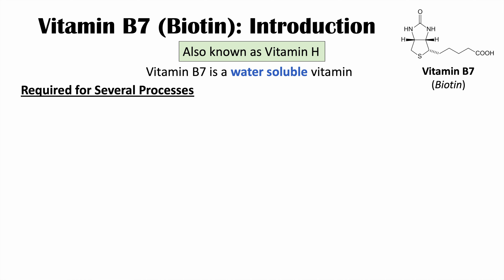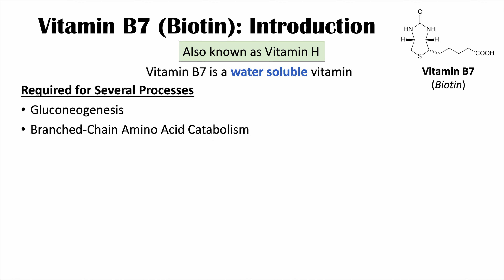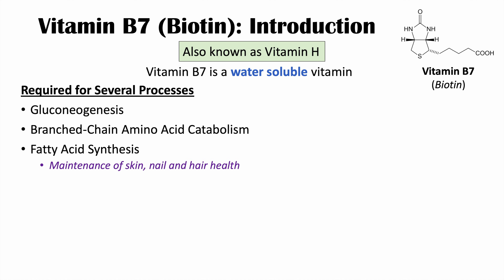Why do we need biotin? It's required for several processes. One of those is gluconeogenesis — gluco meaning glucose and neogenesis meaning new formation — so new formation of glucose from other nutrient substrates. It's also involved in branched chain amino acid catabolism, or breakdown of branched chain amino acids, and it's involved in fatty acid synthesis. In doing so, it's also important in the maintenance of skin, nail, and hair health.